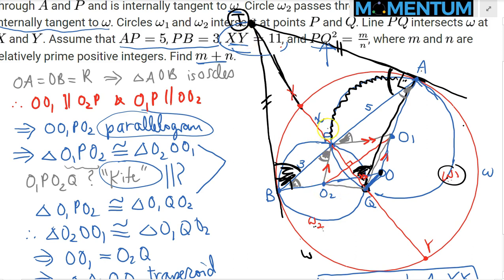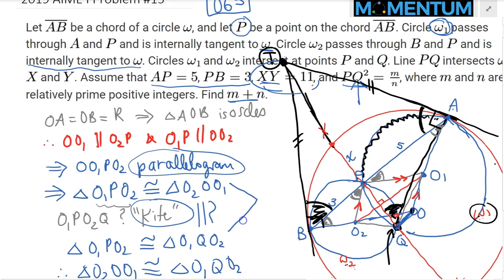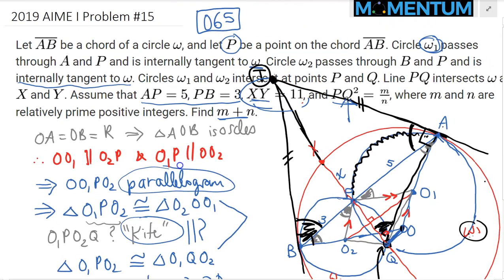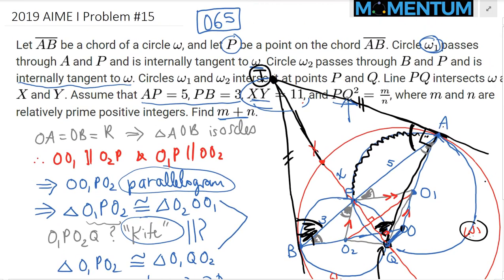Another way: if you follow the playlist about semidians, it's easy to notice that Q is the semidian point of triangle AXB. There are many approaches to this problem — it's a pretty neat problem. I hope you enjoyed it and I'm looking forward to seeing you in our next lecture.